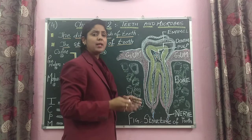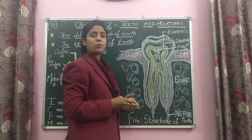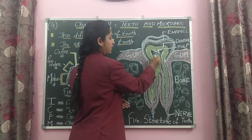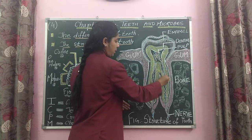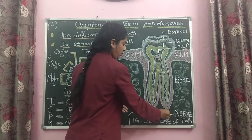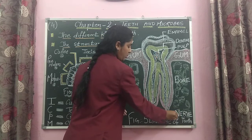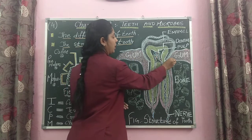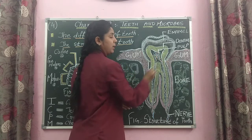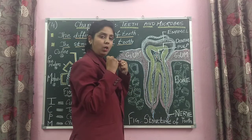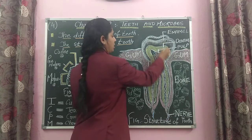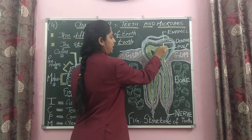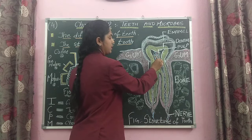Dentine is less hard than enamel, but it gives protection to the pulp. The pulp contains blood vessels and nerve tissue. The nerve comes outside through the root area and gets connected to the gums. The gums give total protection to the tooth. The pulp, which gets protection from the dentine, contains all the blood vessels and nerves.